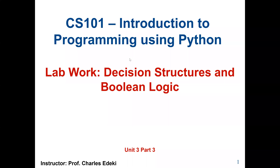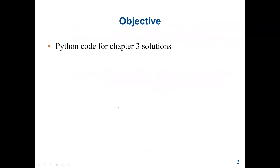Welcome to CS101, Introduction to Programming Using Python. This lab will cover Chapter 3 of our course textbook, which is Decision Structures and Boolean Logic. In our lectures, we went through decision control structures, also called selection statements, and what relational operators and logical operators are, and how we formulate selection statement conditions.